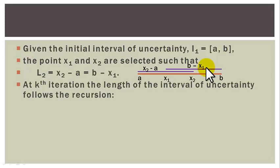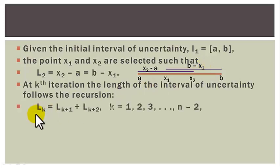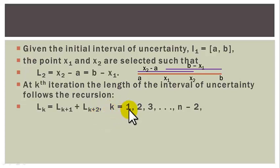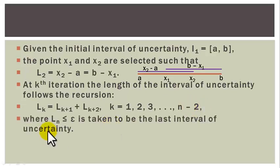At step k, the length of the interval of uncertainty follows the following recursion: LK equals LK+1 plus LK+2, for K equals to 1, 2, 3, up to N minus 2, where LN is less than or equal to epsilon and is taken to be the last interval of uncertainty.